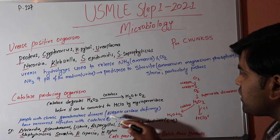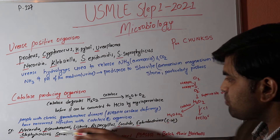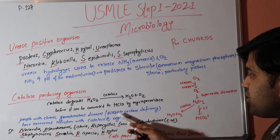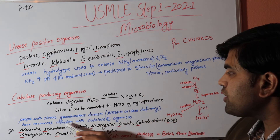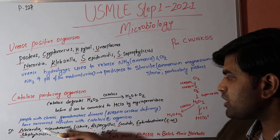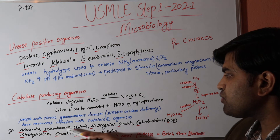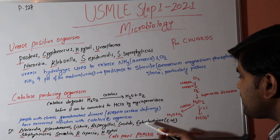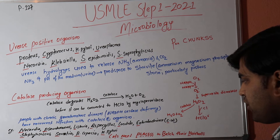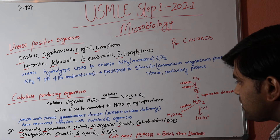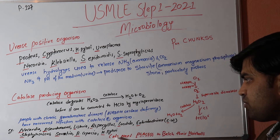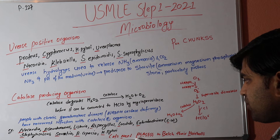The problem arises when there is a deficiency of the enzyme NADPH oxidase. People with chronic granulomatous disease have NADPH oxidase deficiency and develop recurrent infections with catalase-positive organisms. These include Nocardia, Pseudomonas, Listeria, Aspergillus, Candida, Enterobacteriaceae, Staphylococcus, Serratia, Burkholderia cepacia, and H. pylori.